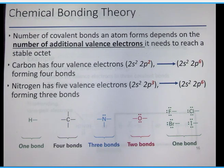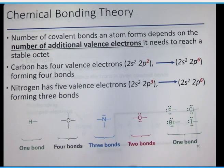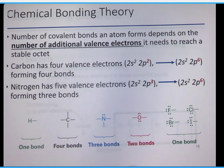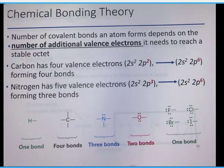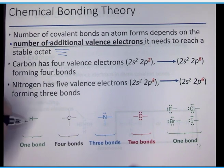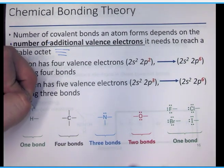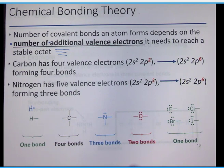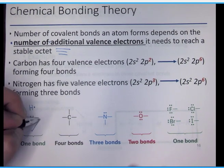This is our third video for chapter one, looking at chemical bonding theory. The number of covalent bonds an atom forms depends on the number of additional valence electrons it needs to reach a stable octet. For hydrogen, it had one electron and only needed one more — hydrogen can't have eight electrons around it, the most it can have is two, so that's why we see it forming one bond.